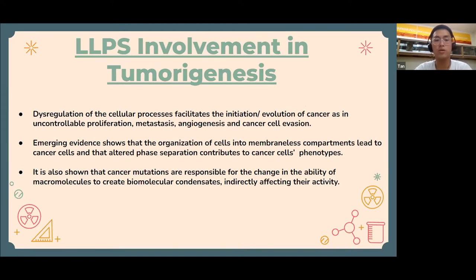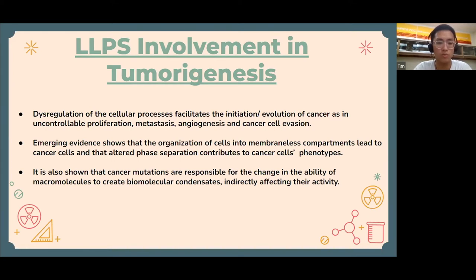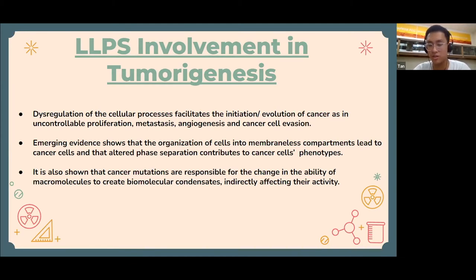However, when the cellular processes I mentioned become dysregulated because of mutation, this is where cancer starts coming into place. When cancer cells become mutated, it results in uncontrollable proliferation, metastasis, angiogenesis, and evasion of cancer cells into the system. It has also been found that the formation and regulation of liquid-liquid phase separation has a connection to tumor tumorigenesis. Cancer mutation is also responsible for changes in the ability of macromolecules to create biomolecular condensates, which indirectly affects their activity.